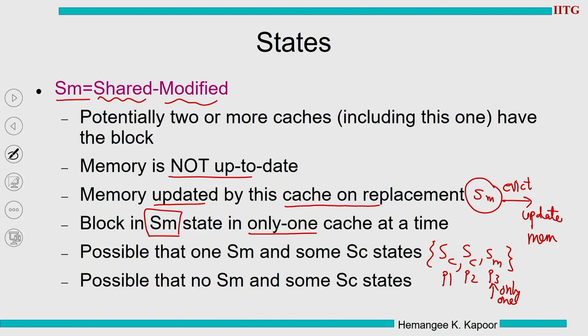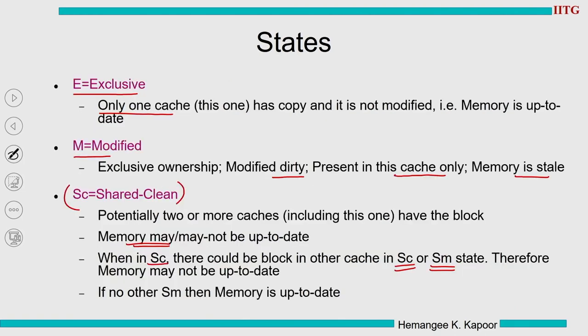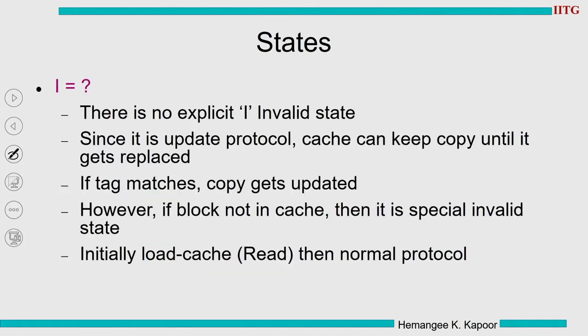It is also possible that there is no SM and only SC states exist. When we are in SC, this cache has the most up-to-date data but you cannot infer about the memory, because if there is another SM in the system it will eventually update the memory. Being in SC only guarantees this cache has the most up-to-date copy; memory may or may not be current.